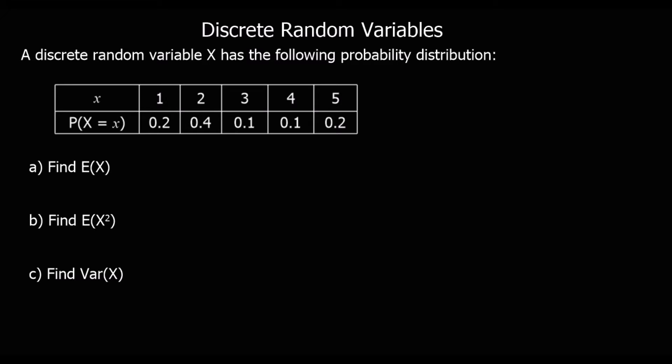Okay, in this video we're going to look at finding the mean and the variance for discrete random variables. The mean we call the expected value of X, so we can think of this as the mean, the average result from this distribution, and the variance we call Var(X).